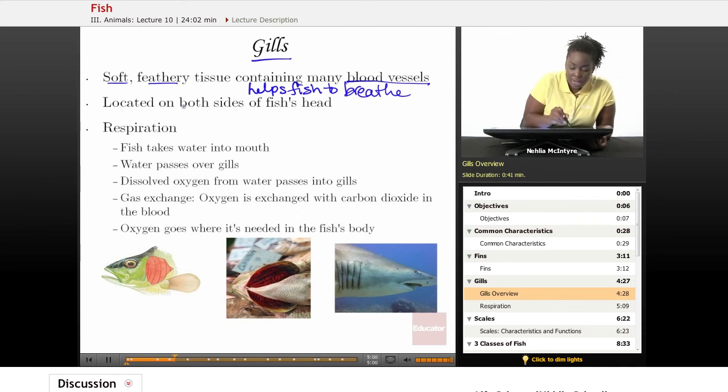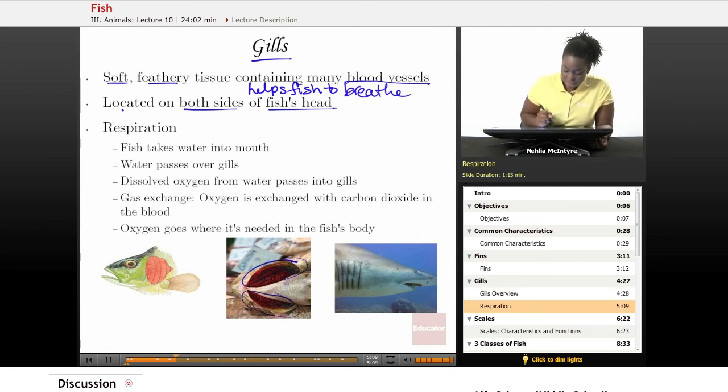The gills are located on both sides of the fish's head, similar to this picture here where you've got the gill here and a gill here on both sides. The gills are used for respiration or for breathing.